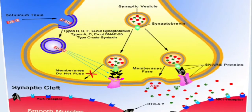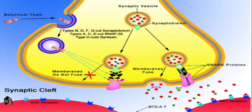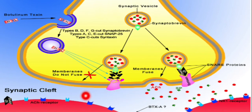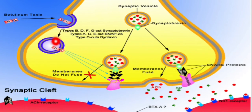Here is the mechanism of botulinum toxin. As you can see, this is the general structure of the neuromuscular junction. You can see the pre-synaptic membrane and post-synaptic membrane, the smooth muscle on both sides, and the synaptic cleft. Here, botulinum toxin enters the junction.